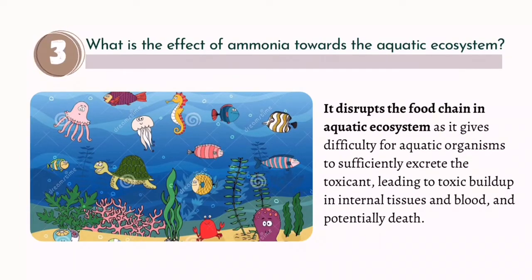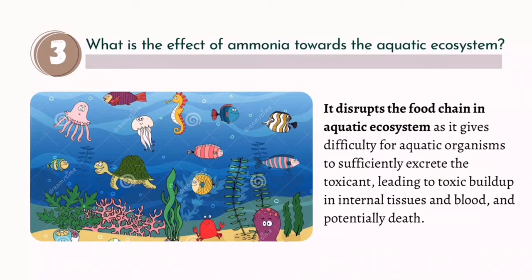What is the effect of ammonia on the aquatic ecosystem? If there's too much ammonia in the ecosystem, it disrupts the food chain. It makes it difficult for aquatic organisms to sufficiently excrete the toxin, leading to toxic build-up in internal tissues and blood, and potentially death. So basically, ammonia can cause death — that's why we need plants that can absorb it.